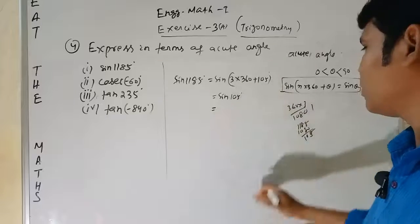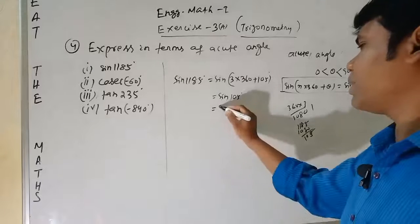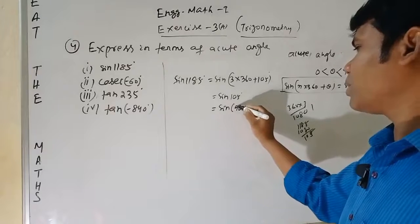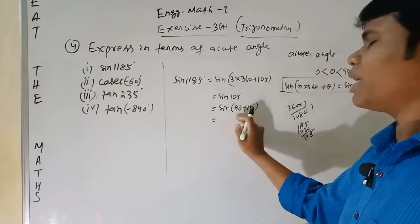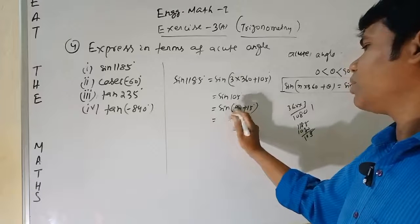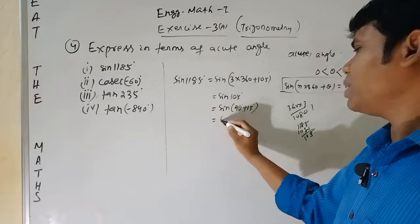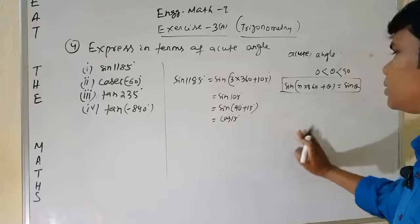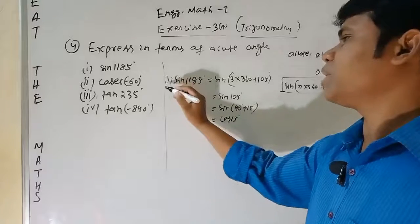sin(105°) is also not an acute angle, so I can express it further. That is sin(90° + 15°). It lies in the second quadrant, so it is positive. sin(90° + 15°) = cos(15°). This is your answer for question number one.